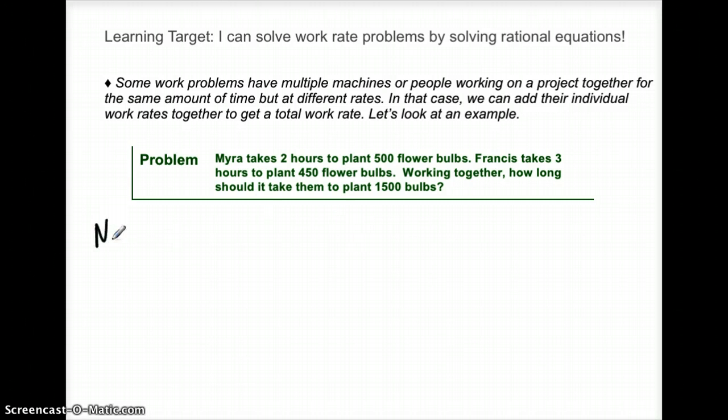Here's my process. I'm talking about two people, Myra and Francis. An individual rate comes from the work divided by the time it took to get that work done. So Myra can plant 500 bulbs in two hours.